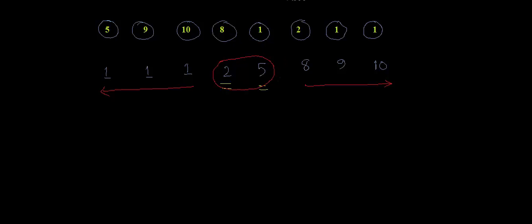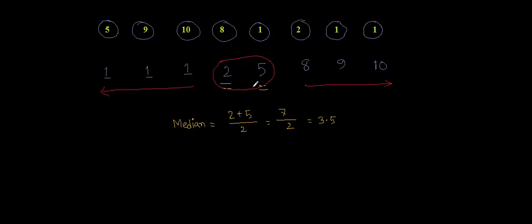To find the median we take the arithmetic mean of these 2 center values. So the median is 2 plus 5 divided by 2. That gives 7 divided by 2, which equals 3.5. The median value for this data list is 3.5, because median must be a single value and we take the arithmetic mean of the 2 central values.